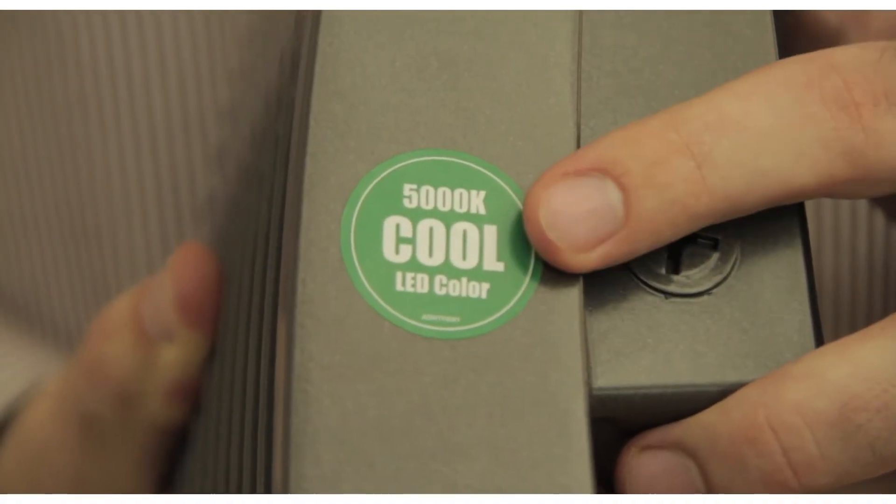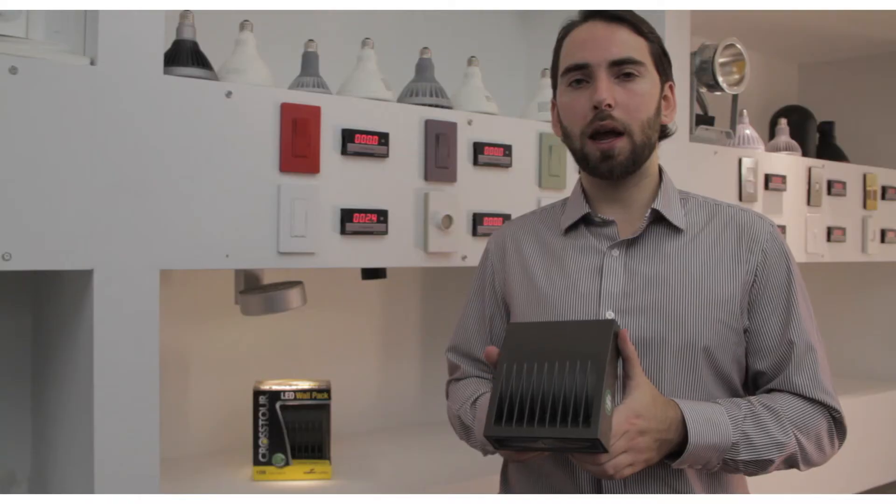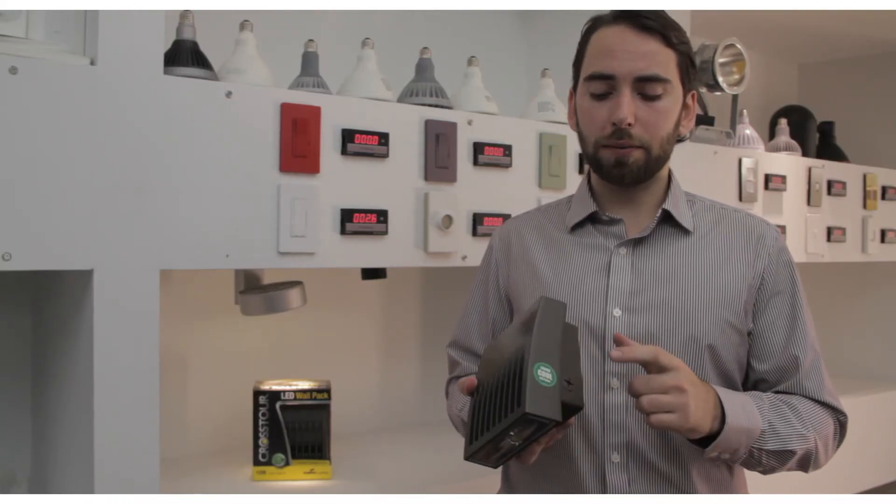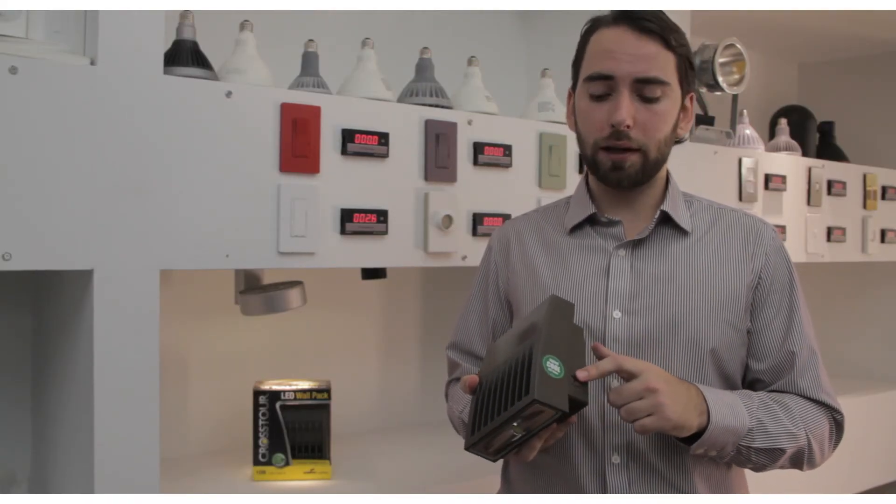The Crosstour comes in two color temperatures, a cooler 5000 Kelvin and a warmer 3000 Kelvin. It also has an option for a photo control button, which can go right in this knockout here.